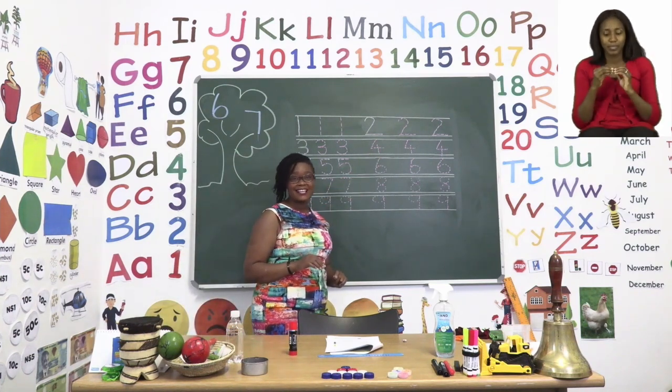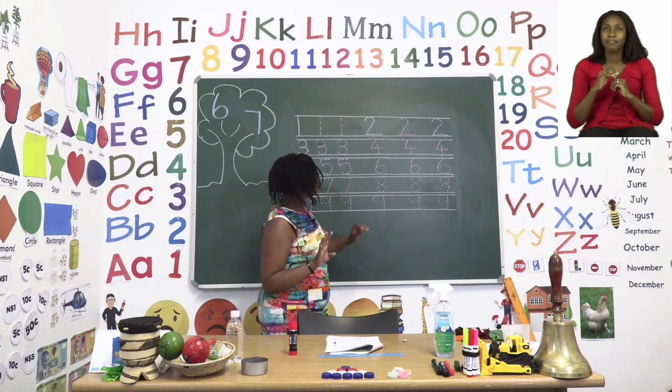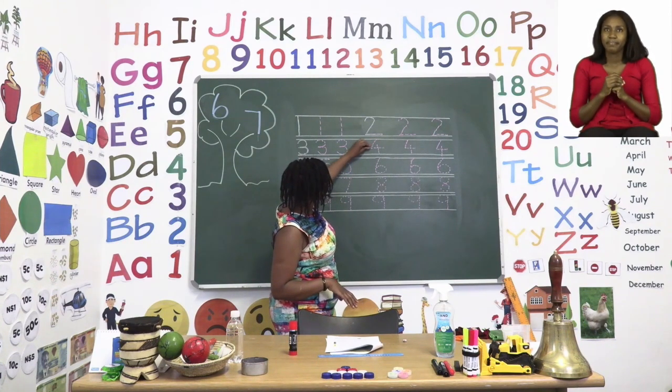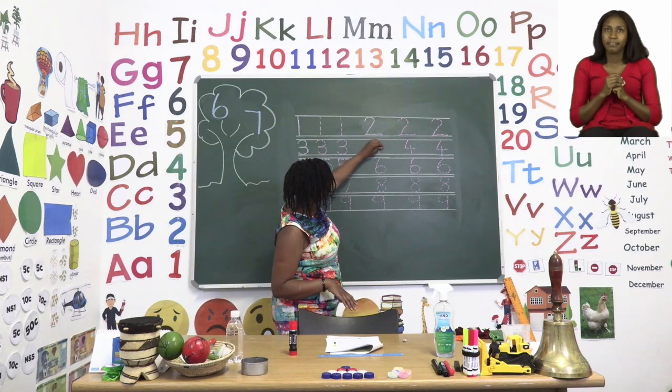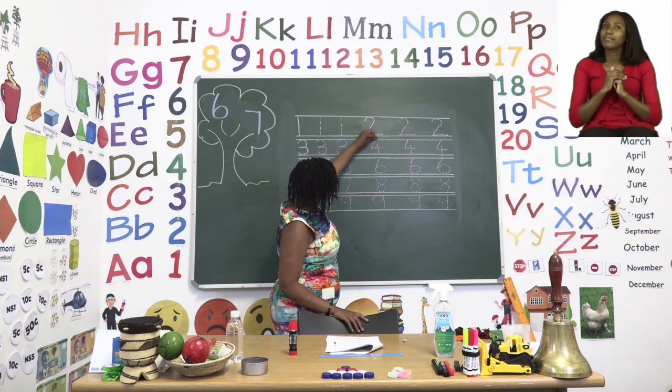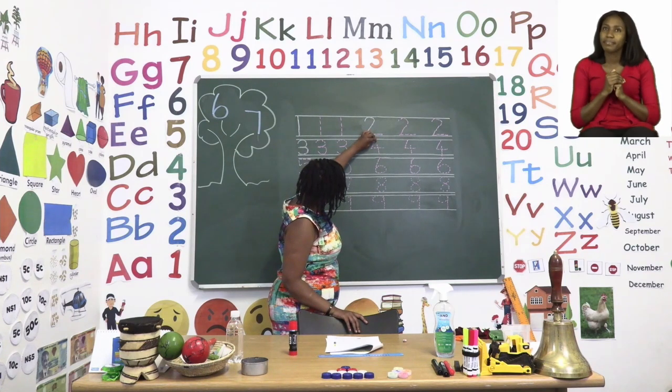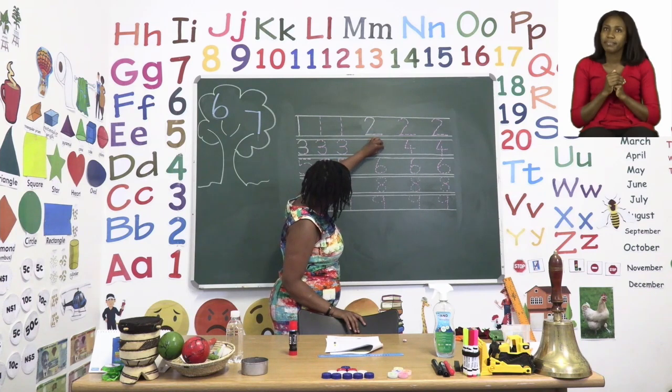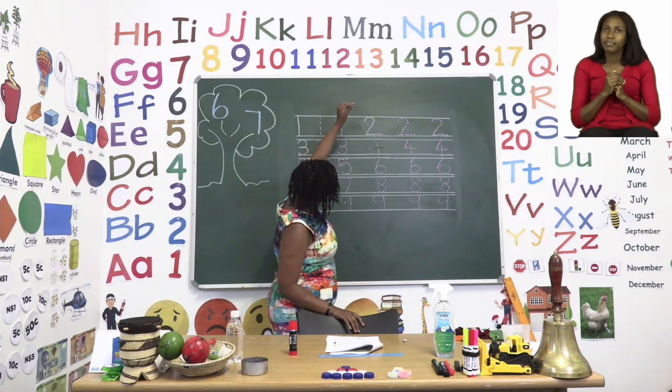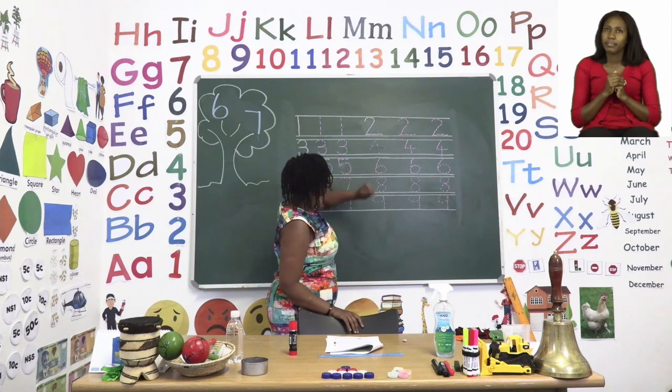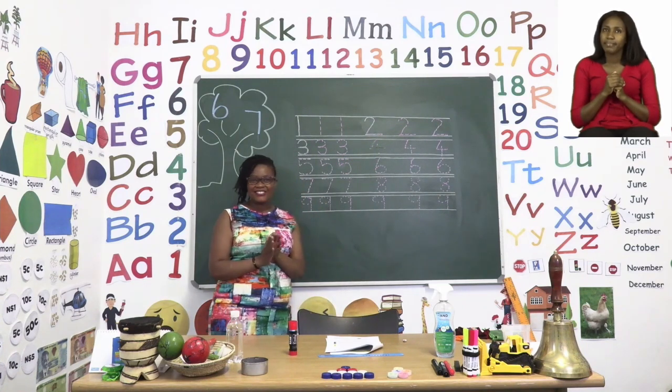The next one we have is number four. Now number four has a corner. So when we get here, we can go across in a straight line. Let's start at the top line and we go down, stop, across and we lift up our pencil and we make the last part of our four. Good job, everyone.